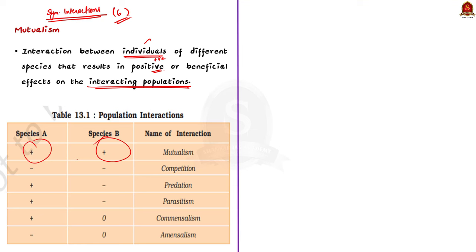A closely related but different concept is competition. Don't confuse competition with mutualism. In a competitive association, both species lose. Have a look at the table — plus symbolizes gain and minus means loss.